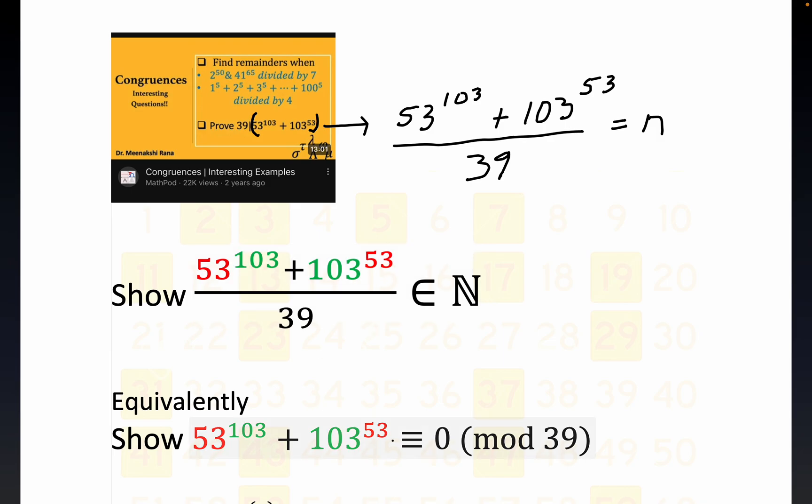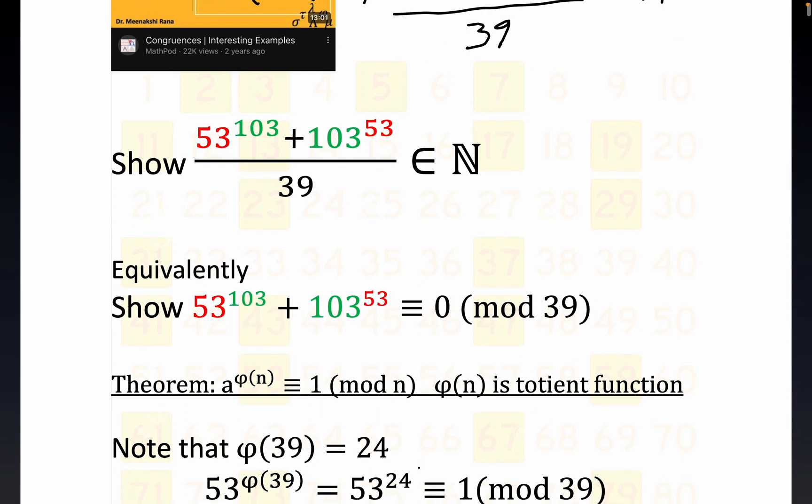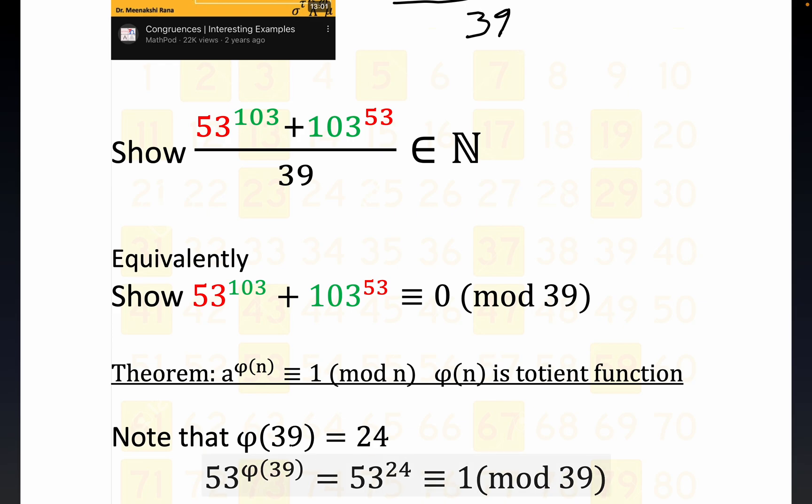Yet another way to write it is in congruence notation. This reads that this quantity minus zero is divisible by 39. This congruence, this modular arithmetic is actually quite nice, and that's why I prefer that form. There's a very well-known result from number theory that helps you reduce these huge exponentials mod n. This result right here, it says a to the φ of n is congruent to 1 mod n. This is called the totient function.